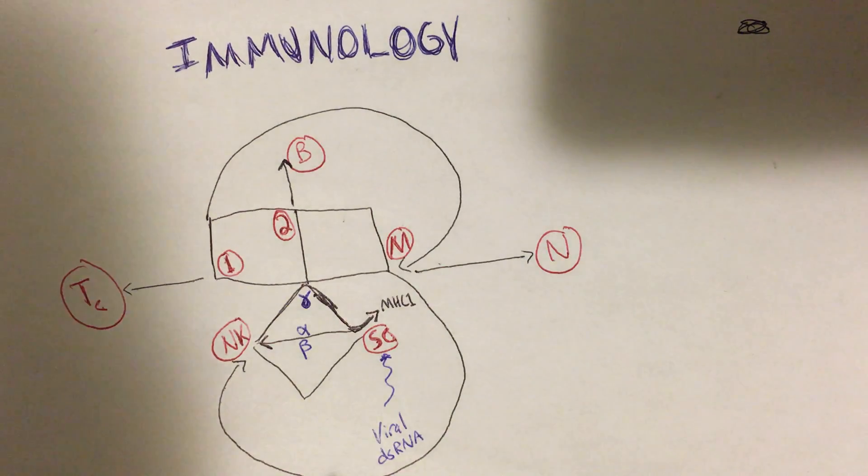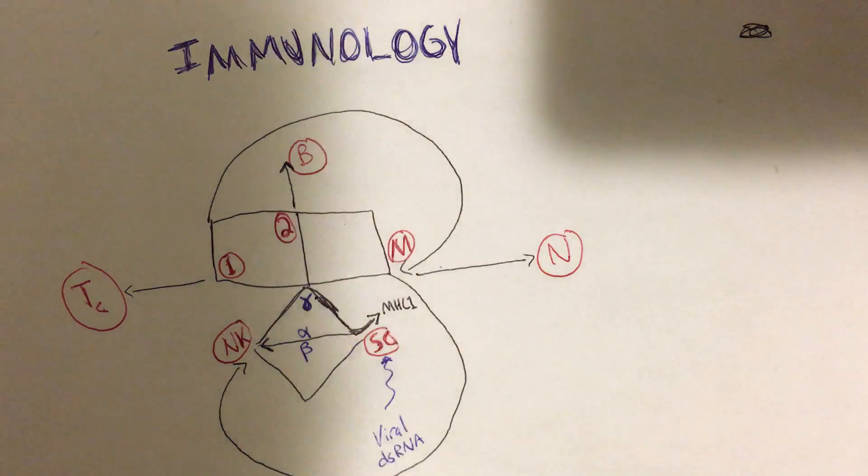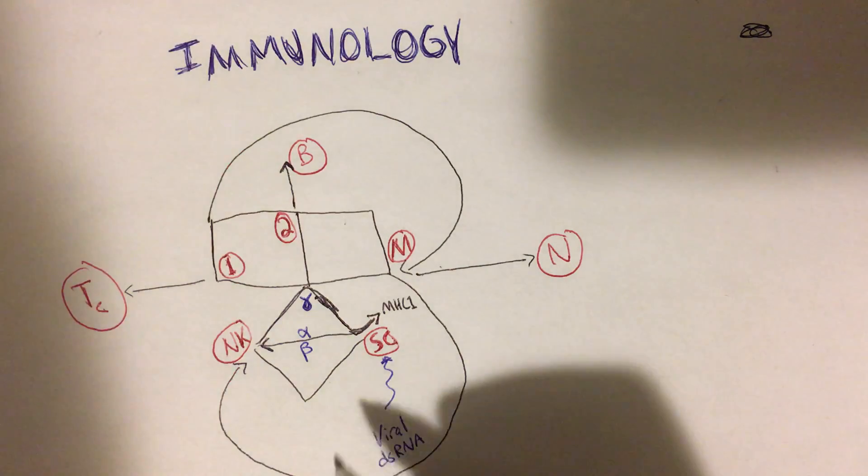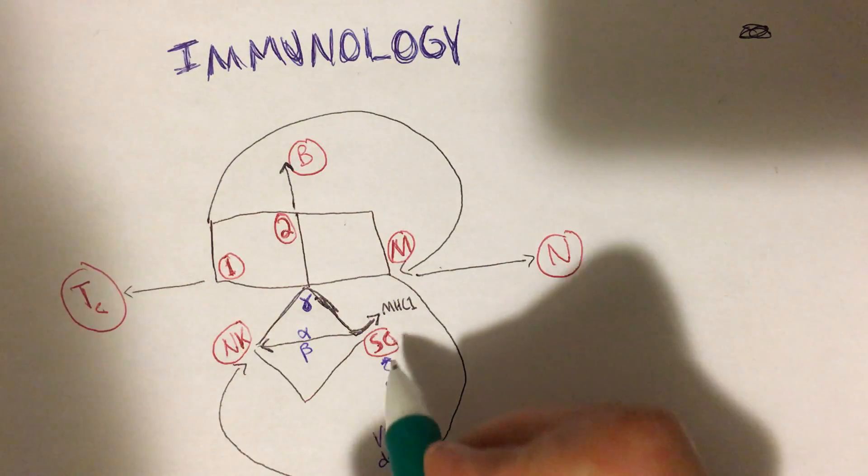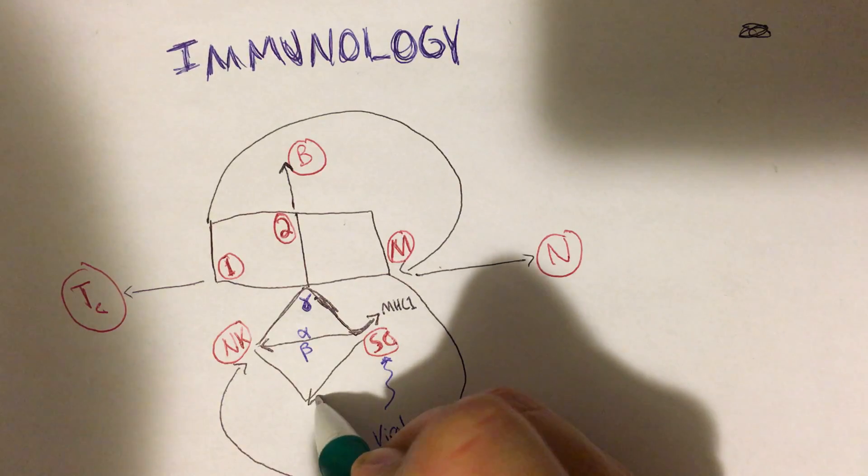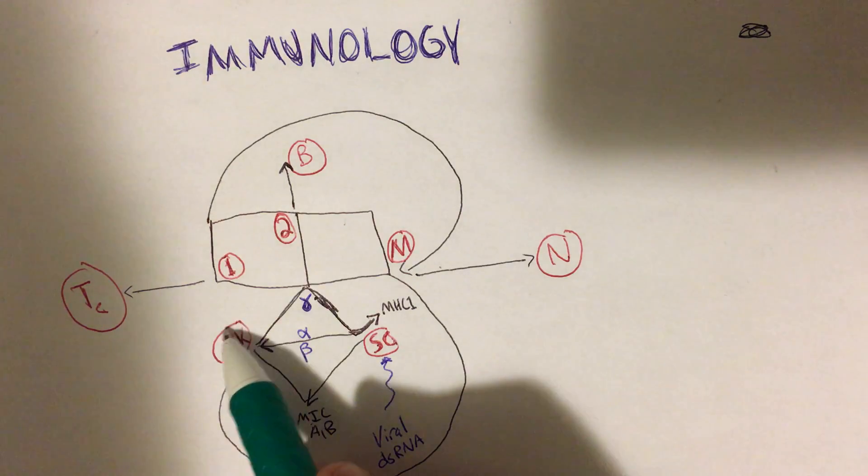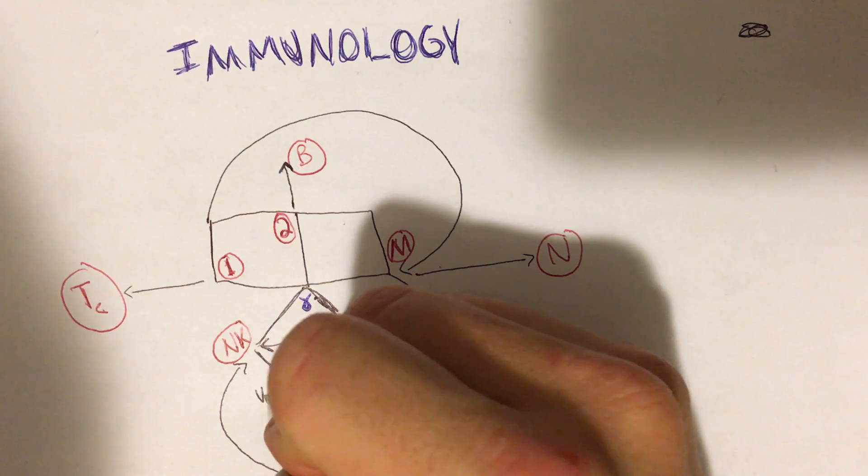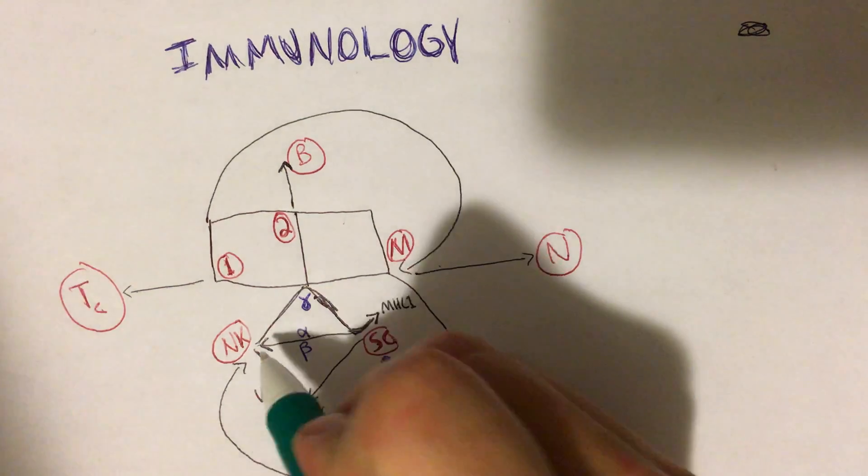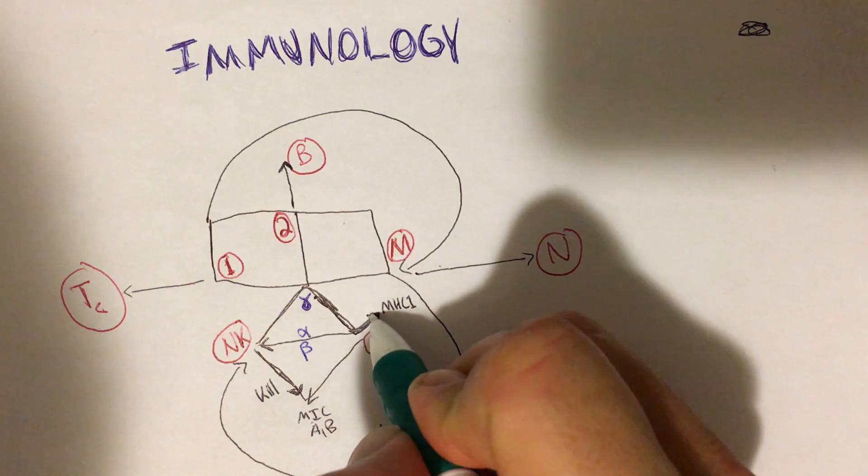So you can see how the adaptive right here and innate immune response, which is going on right here, are sort of connected right there, which is kind of nice. The other thing that's going to happen is this infected somatic body cell is going to want to make it known that it is infected to this natural killer cell, which it has turned on. So it's going to get on the mic, so to speak - this is MIC A and B.